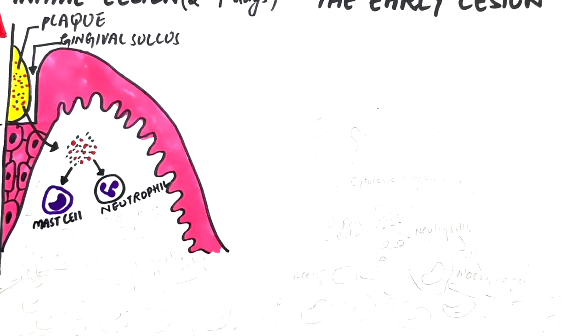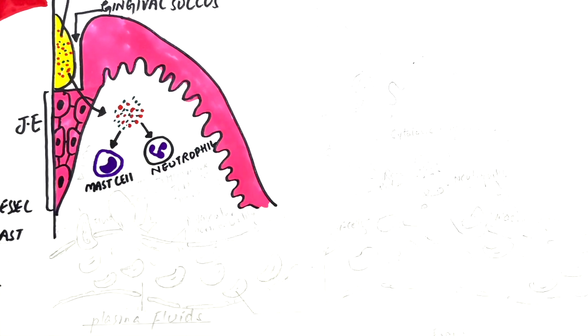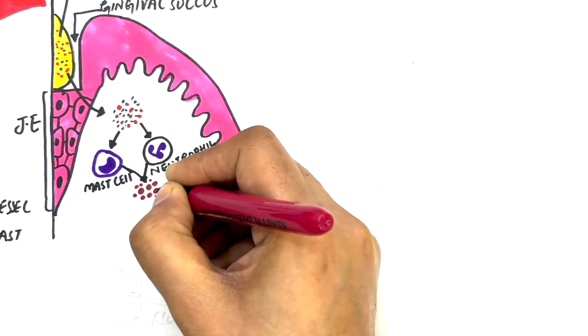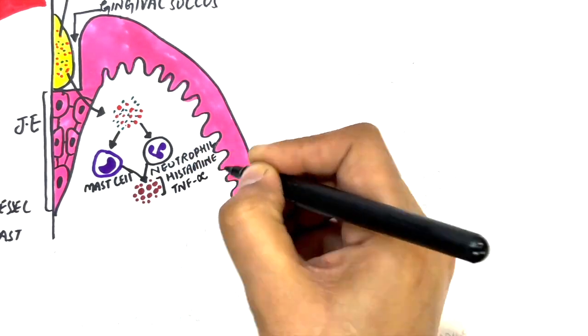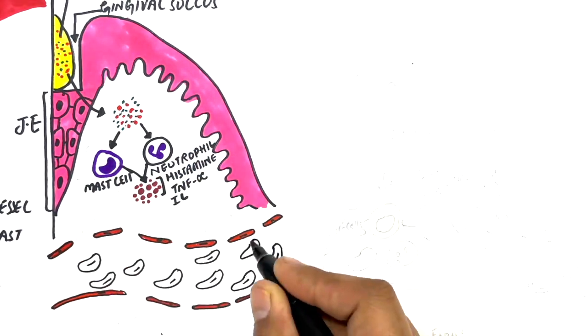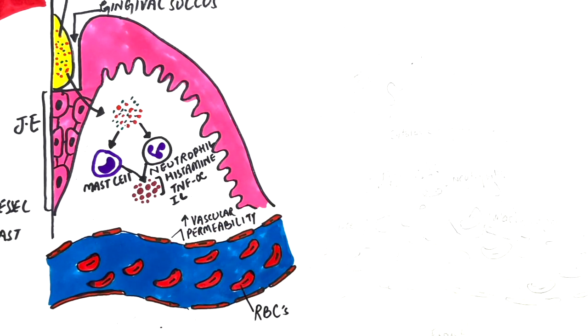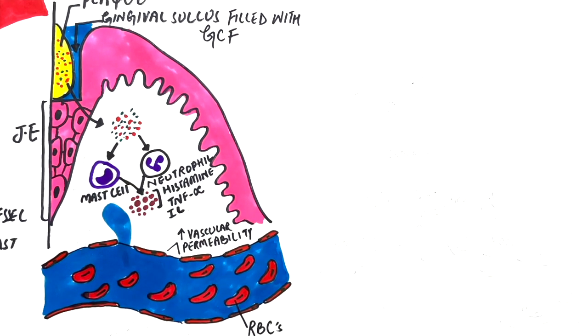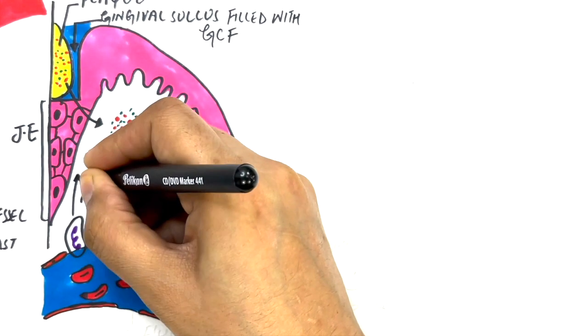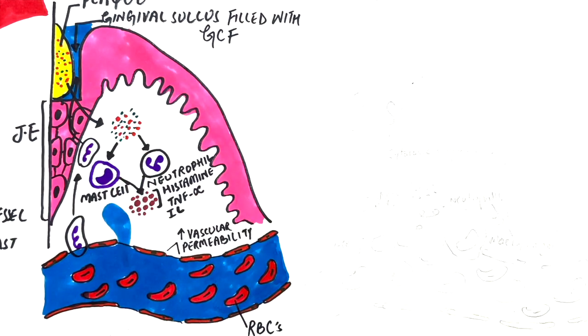The stimulated immune cells release pro-inflammatory cytokines or inflammatory mediators like histamine, TNF-alpha, and submental cytokines. These mediators in turn increase vascular permeability and allow extravasation of plasma fluids or exudate into the gingival sulcus. The exudate within the gingival sulcus is referred to as the gingival crevicular fluid or GCF. Neutrophils are also observed leaving the blood vessels through the process of diapedesis and entering the junctional epithelium and beyond it within the gingival sulcus through chemotaxis.